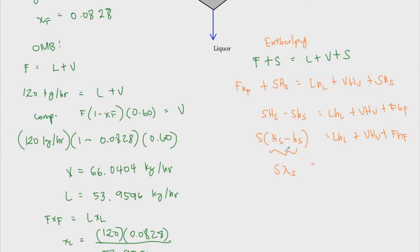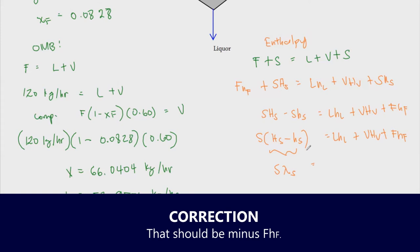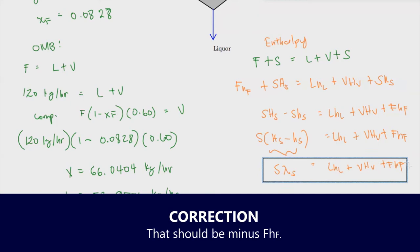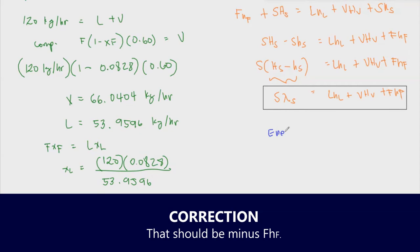The final form of the enthalpy balance is: S times lambda_s equals L times h_L plus V times H_V minus F times h_F. If you have all the enthalpies, use this directly. But since we don't always have that data, let's devise another method and do the energy balance instead.